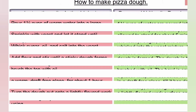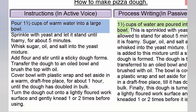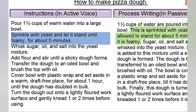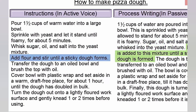Now let us take each sentence one by one and convert it into passive voice. One and a half cups of water are poured into a large bowl. This is sprinkled with yeast and allowed to stand for about five minutes until it is foamy. Sugar, oil, and salt are then whisked into the yeast mixture. Next, flour is added to this mixture until a sticky dough is formed.